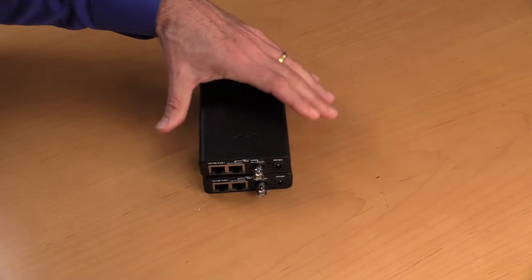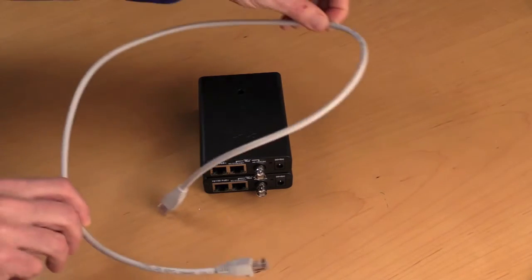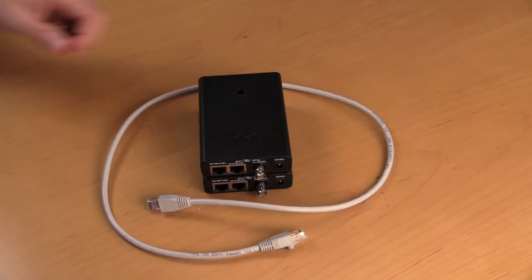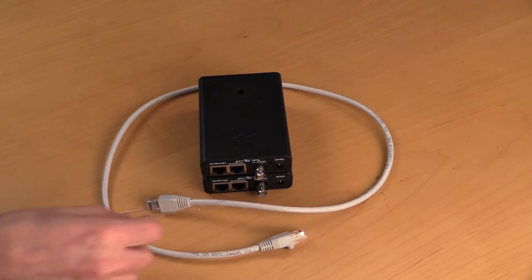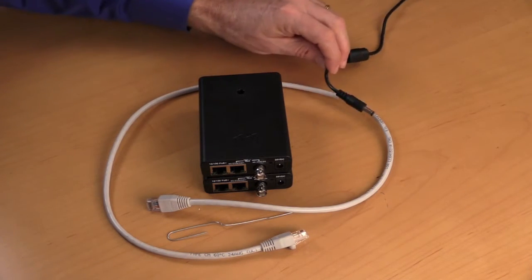In step one, we will gather the materials. Those materials include two NVT ET1801s, our patch cable, and we can use an RJ45 patch cable or a coax jumper, a paper clip, and the NVT power supply.